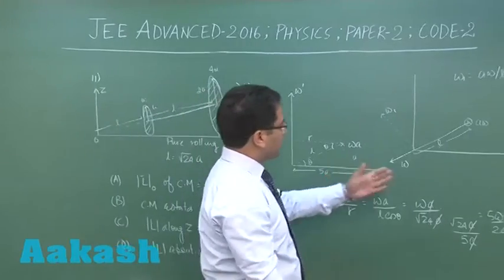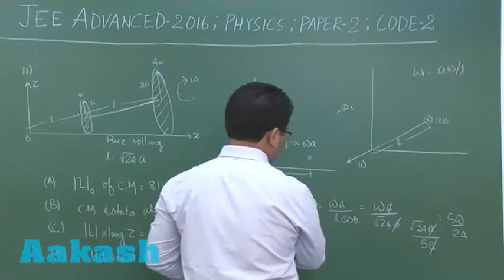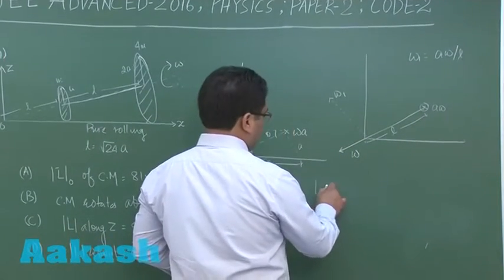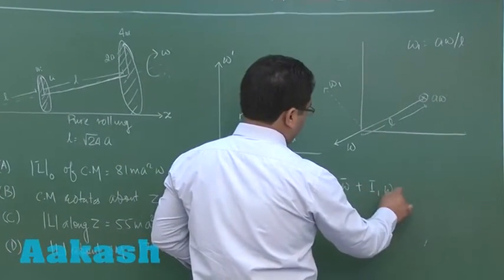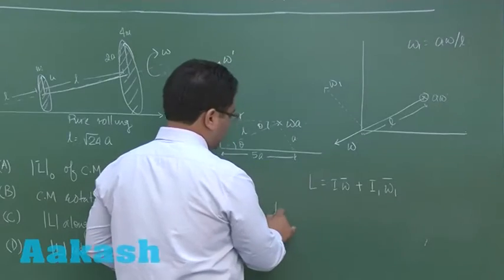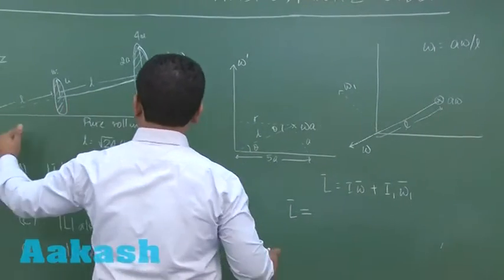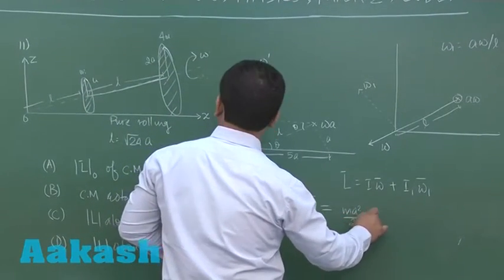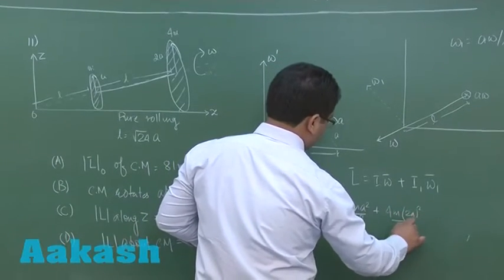Now one is omega 1, other is omega, and if we try to calculate the angular momentum, we get L is I omega plus I1 omega 1 vector. Now let me expand it. I about this term for this would be m a squared by 2, plus 4m into 2a squared by 2, times omega.